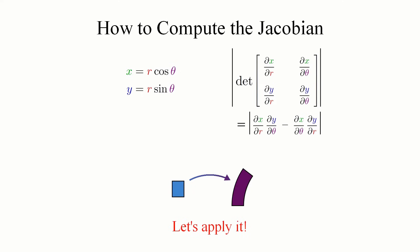First, we take the partial derivatives of x and y with respect to both of their independent variables. The partial of x in r will just be cosine of theta, since theta is treated as a constant, and the partial of x in theta will be negative r sine of theta. Likewise, the partial of y in r is just sine of theta, and the partial of y in theta is r cosine of theta.